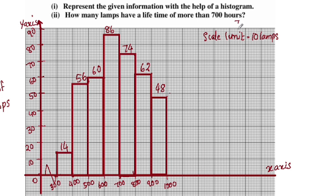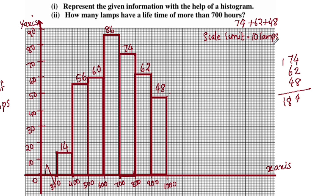The answer requires us to calculate: 74 plus 62 plus 48, which equals 184. This is the answer — 184. This was question number 5, a simple question. We will see you in the next video for question 6.